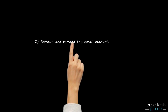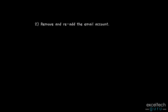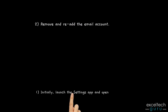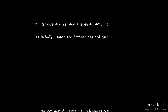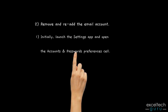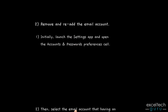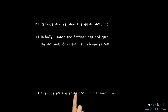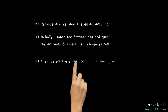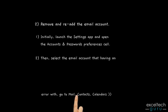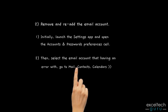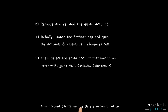2. Remove and re-add email account. Step 1: Launch the Settings app and open the Accounts and Passwords Preferences. Step 2: Then select the email account that is having an error. Go to Mail, Contacts, Calendars, then Mail Account, and click on the Delete Account button.